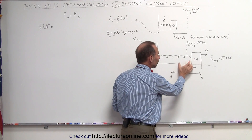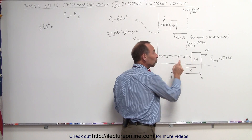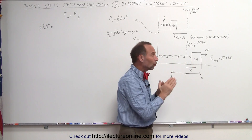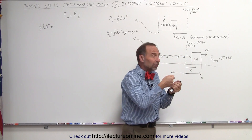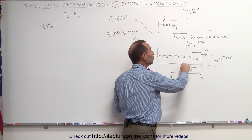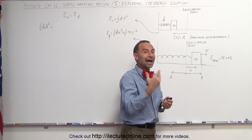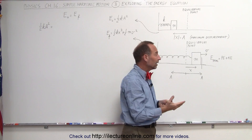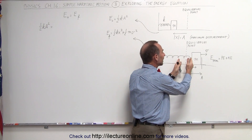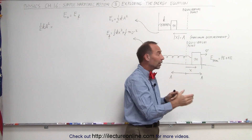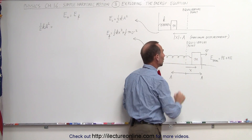When the block passes exactly through the equilibrium point, at that moment there's no energy stored in the spring at all. That's what the equilibrium point means — there's no energy stored in the spring. All the energy will then be contained in the block, which will then have its maximum velocity. So the only energy the block will have is the kinetic energy, which is one half mv squared, when the velocity at that point will be maximum.